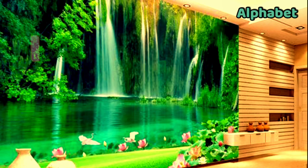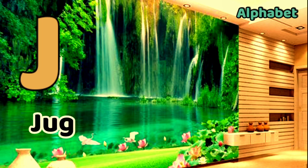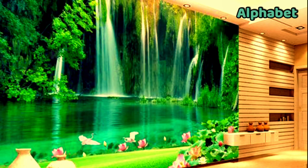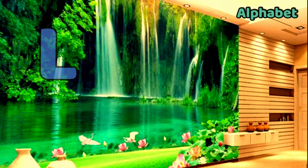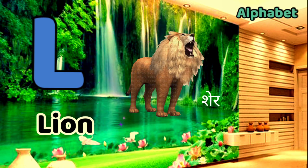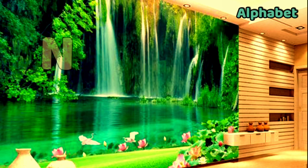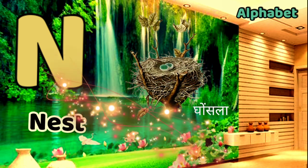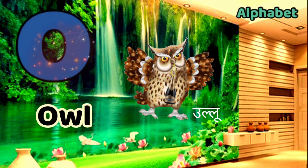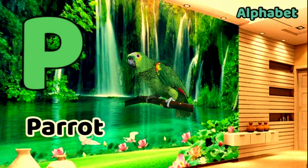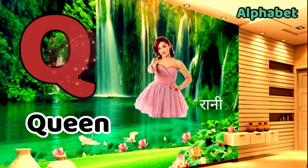I for input, J for jug, K for kite, L for loin, M for monkey, N for nest, O for owl, P for parrot, Q for queen.